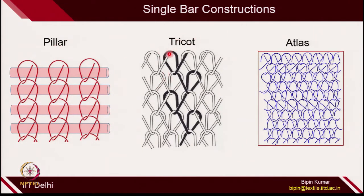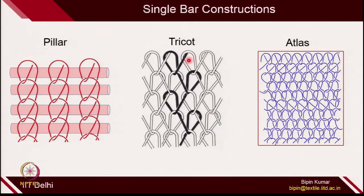The second structure is tricot, which is the most simple and widely used structure in the warp knitted category. In tricot, the guide bar shifts from one needle to its alternate column. The guide bar can shift from one needle to the second, third, or fourth needle depending on the construction. We talked about 1 cross 1 tricot, 2 cross 1, 3 cross 1, and 4 cross 1 tricot. In tricot, the overlap will always be 1, but the underlap can keep on changing — you are basically changing the floating length. This is very popular in single bar construction.